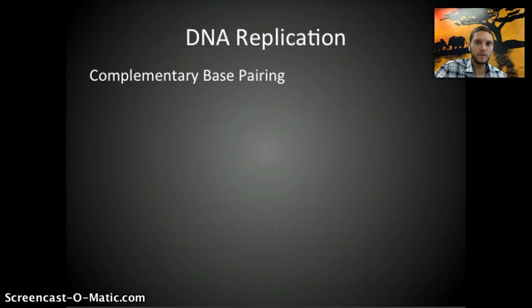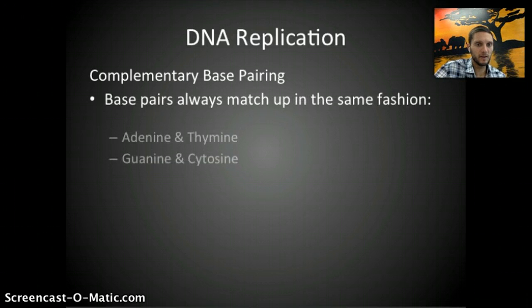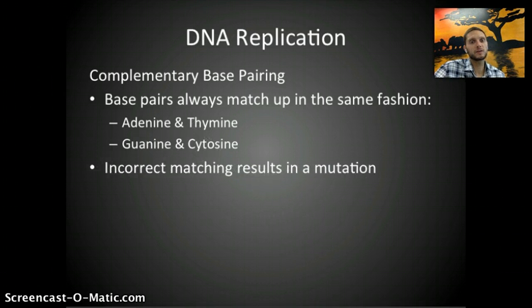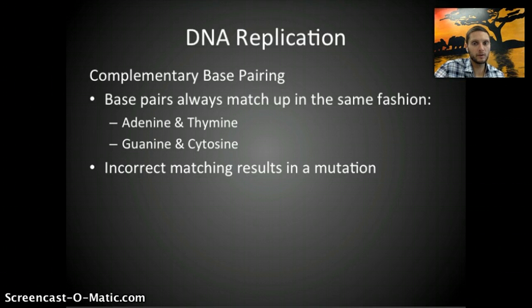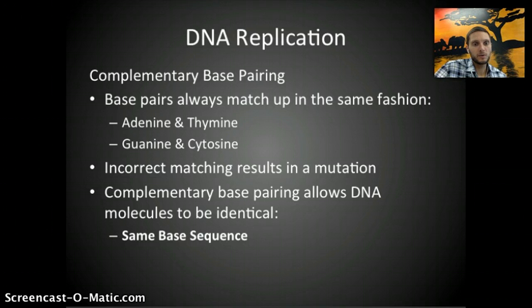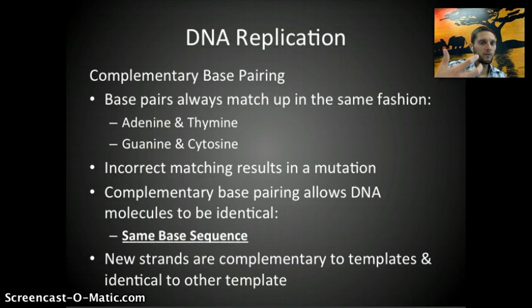To recap DNA replication: it is a process of complementary base pairing, where base pairs always match up the same way — adenine with thymine, guanine with cytosine. An incorrect match results in a mutation, which is rare but can happen. DNA polymerase has a proofreading function that double-checks nucleotides being added to hopefully ensure they are correct. Complementary base pairing allows the two new strands to be identical to the original, producing the same base sequence, which is critical for cells to function as the originals did.